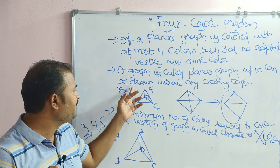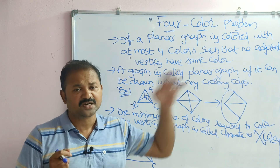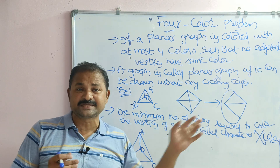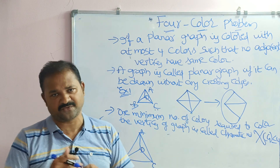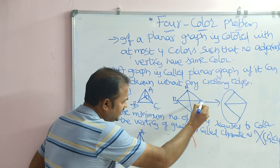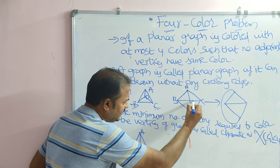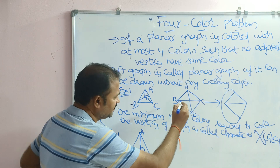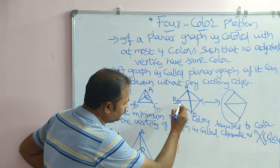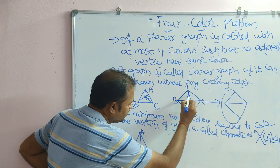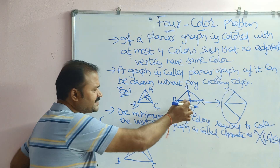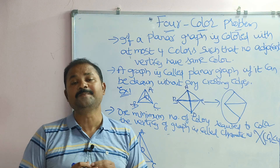In contrast, a non-planar graph is one that can be drawn only with crossing edges. For example, consider a graph with vertices A, B, C, D, E. Here there is an edge from A to D and B to C, and these two edges cross each other, so this is a non-planar graph.